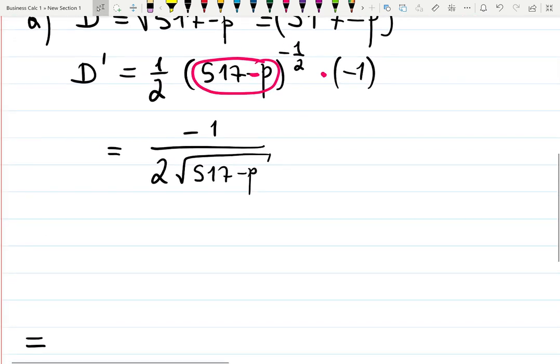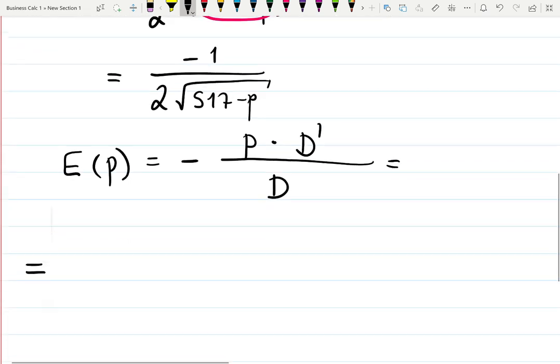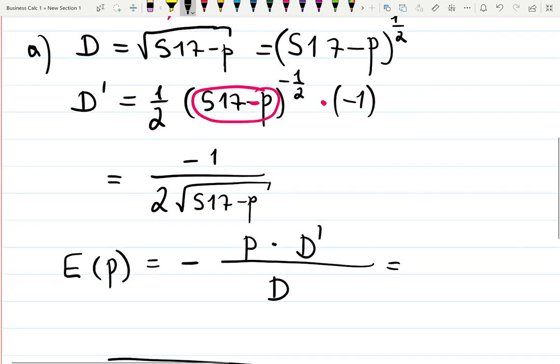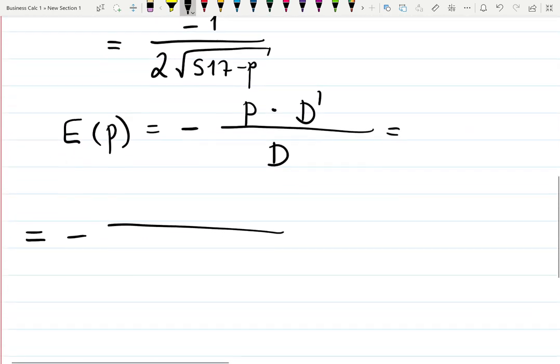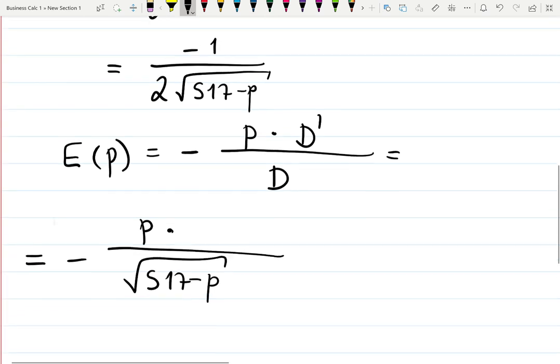Now we can finish the formula. E(p) will be—remember the negative sign in front—and the original D is at the bottom, p is at the top, and then D' is at the top as well. Let's plug everything in. Negative sign, original function was √(517 - p).